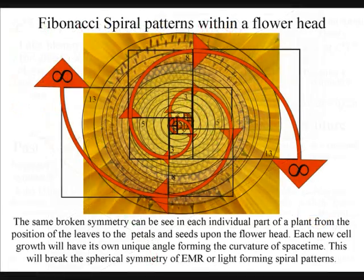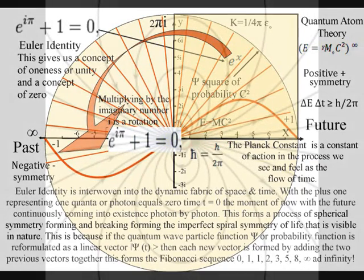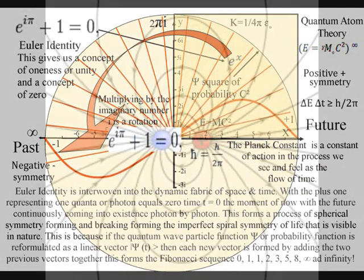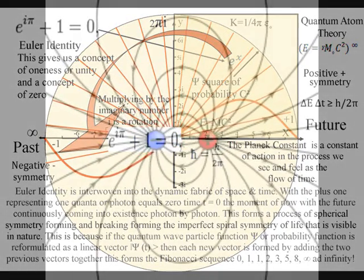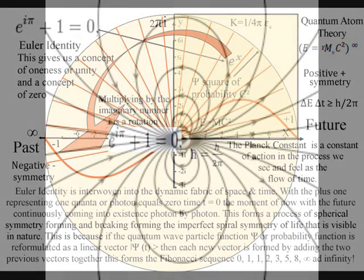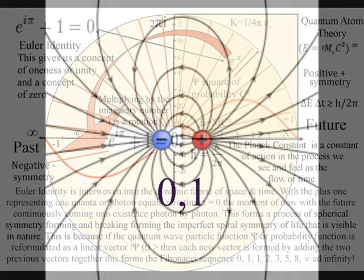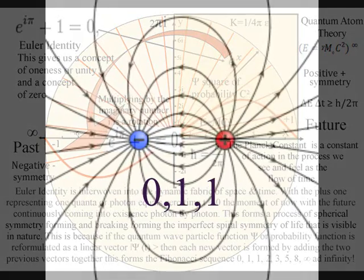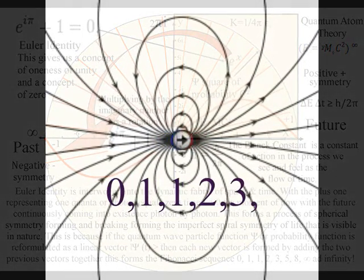As can be seen on the diagram, we already have zero representing the moment of now, time equals zero, with positive one and minus one representing the positive and negative of electromagnetic waves. Therefore we even have the start of the Fibonacci sequence in the diagram. This is linked to Euler's identity, giving this beautiful equation a place in the structure of space and time.